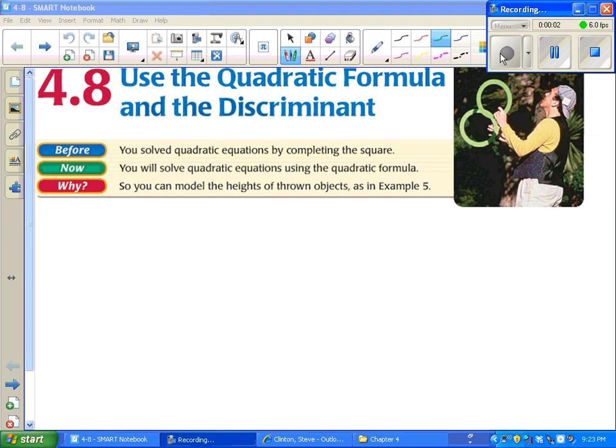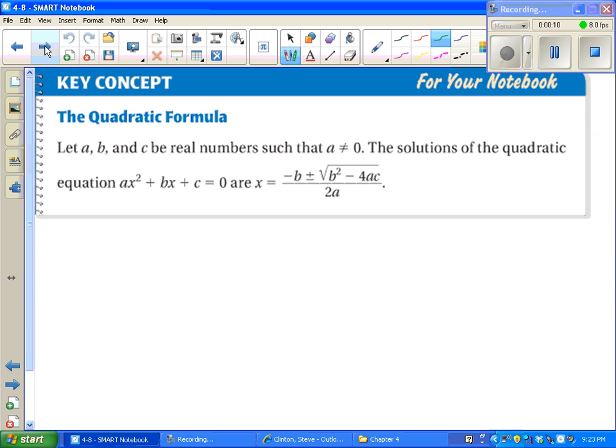4.8. We're going to solve quadratic equations using the quadratic formula. It's a real messy formula you might remember from Algebra 1. And here it is. x equals negative b plus or minus the square root of b squared minus 4ac all over 2a.